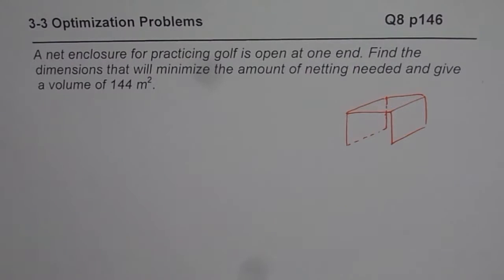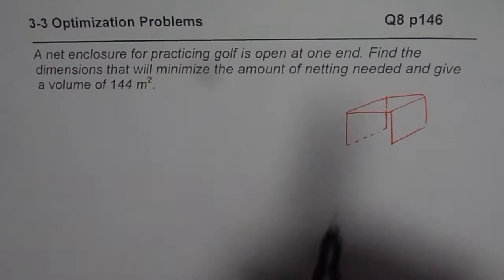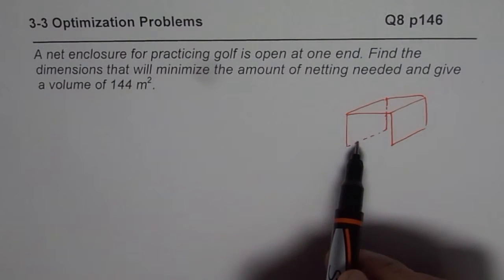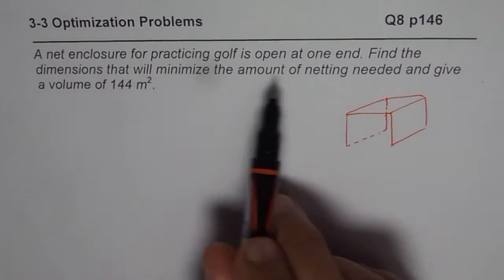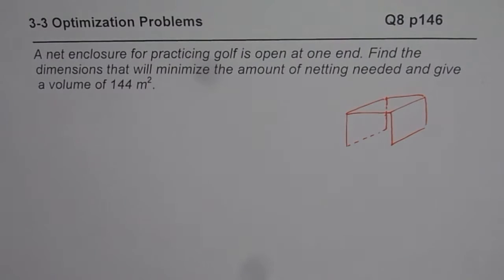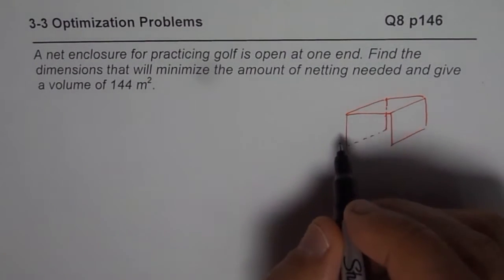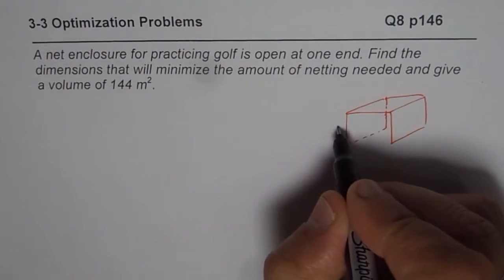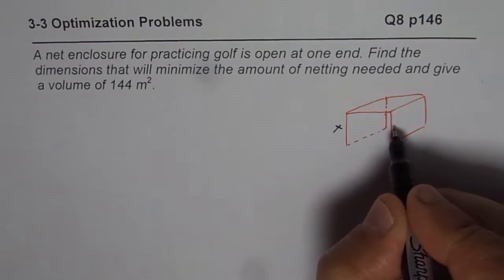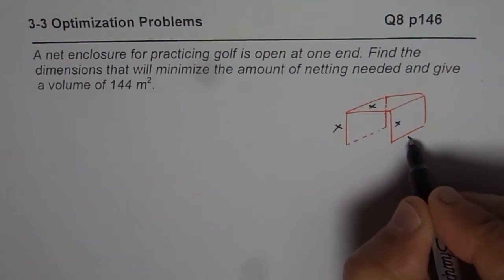We need to find the minimum area that will give us minimum cost of netting. And we are given the volume occupied by this net. So that volume can help us find a relation between length, width and height of the given net. So this practicing net, let us say, has got height of x. So it's square, so this will be also x. And let's say the depth here is y.